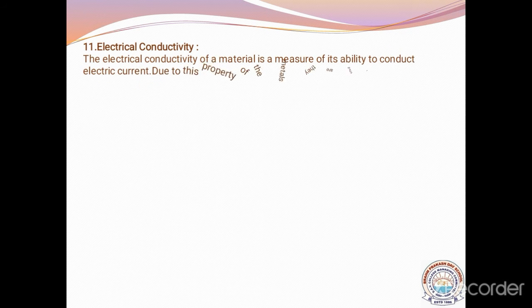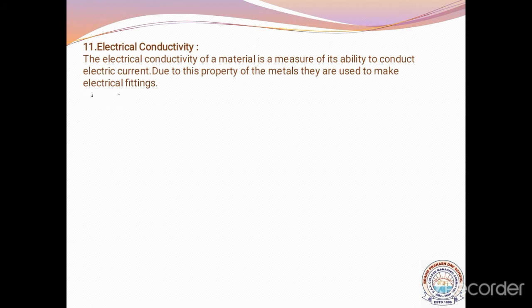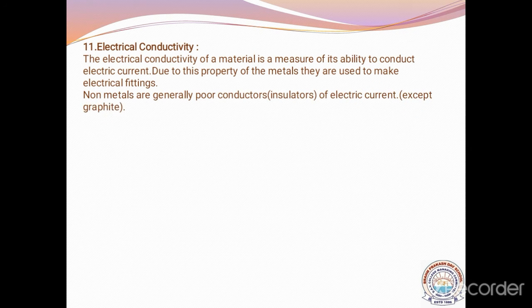Because of electrical conductivity, metals are used in many electrical fittings. Non-metals don't have the property of electrical conductivity, but here we have an exceptional case — the allotrope of carbon, graphite, can conduct electricity. We use graphite rods for conducting electricity in the electrolysis process, which we will see in other lessons like electric current and its chemical effects, and also in metallurgy.